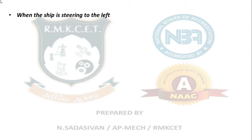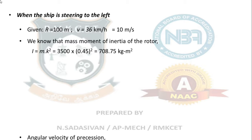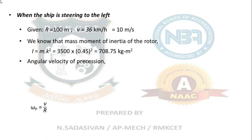For Case 1, the ship is steering to the left. The radius of the path of the turn is 100 meters, and the ship travels at 36 km per hour, which converts to 10 meters per second. The mass moment of inertia of the rotor is I = mk², giving 3500 × (0.45)² = 708.75 kg·m².